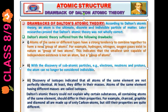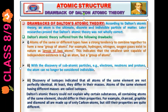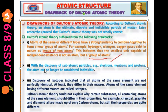The Dalton atomic theory suffered from the following drawbacks. Number one: atoms of the same or different types have a strong tendency to combine together to form a new group of atoms. For example, hydrogen, nitrogen, and oxygen gases exist in nature as a group of atoms. This indicates that the smallest unit capable of independent existence is not an atom but a group of atoms.